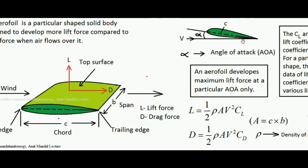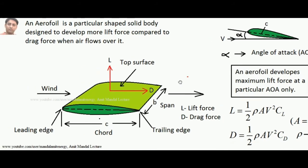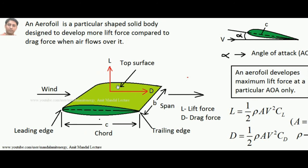The angle made by the chord with the velocity of wind is called the angle of attack, denoted by alpha. If we want maximum lift, that maximum lift can be generated at a particular optimum angle of attack alpha. So there is an optimum angle of attack at which we will get maximum lift. This concludes our short review of aerofoil, lift force, and drag force.